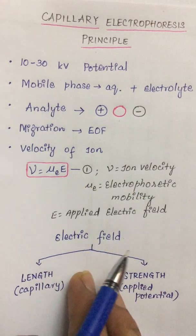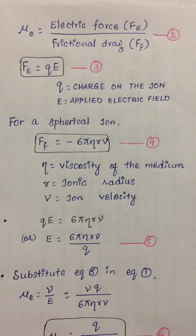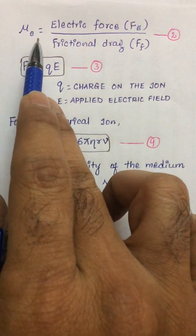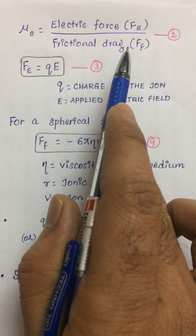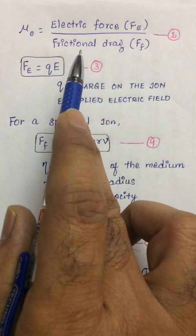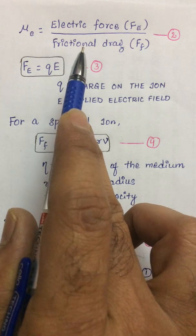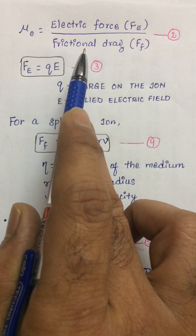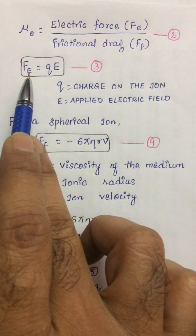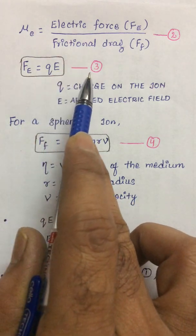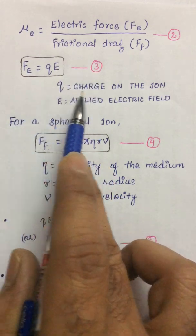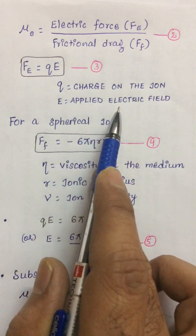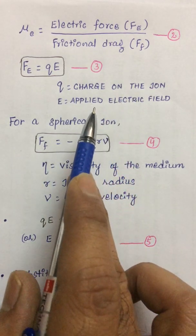In this principle, we correlate ionic mobility with the electric field, viscosity of the medium, and ionic radius. The electrophoretic or ionic mobility is given by the ratio of electric force (Fe) to frictional drag (Ff). For an ion, there will be friction within the system due to various forces, including the viscosity of the medium. The electric force is given by Fe = q × E, where q is the charge on the ion and E is the applied electric field.